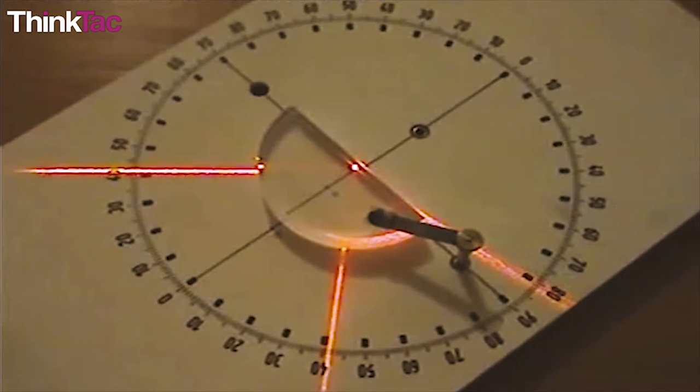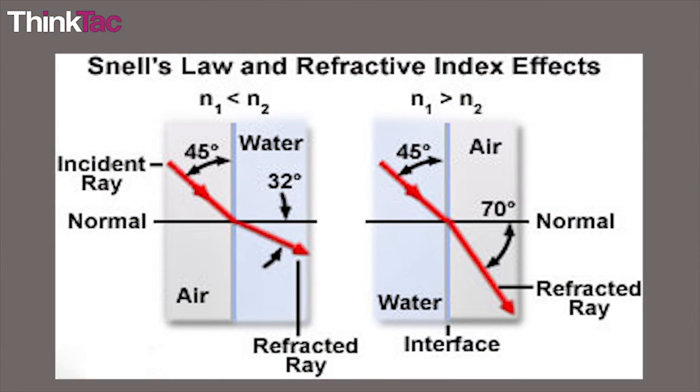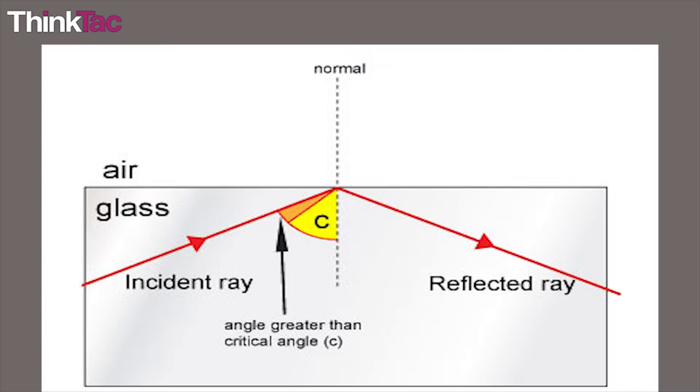A, the ray of light is moving from a medium of higher refractive index to a medium of lower refractive index and B, the angle of incidence of the light is greater than the critical angle.